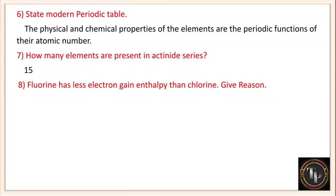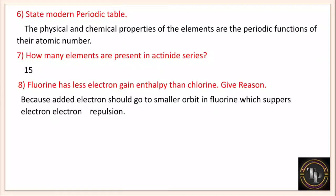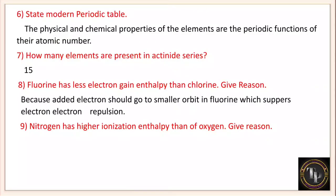Fluorine has less electron gain enthalpy than chlorine — give reason. The added electron must go to a smaller orbit in fluorine, which increases electron-electron repulsion. Electron gain enthalpy is the energy required to add an electron to the outermost shell. In fluorine, the atomic size is very small, so the added electron goes to an inner orbit where repulsion is high. Therefore, fluorine has less electron gain enthalpy.